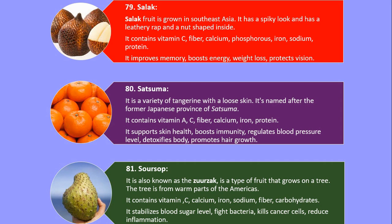Number 81. Soursop. It is also known as the guanabana and is a type of fruit that grows on a tree. The tree is from warm parts of the Americas. It contains vitamin C, calcium, iron, sodium, fiber and carbohydrates. It stabilizes blood sugar level, fights bacteria, kills cancer cells, and reduces inflammation.